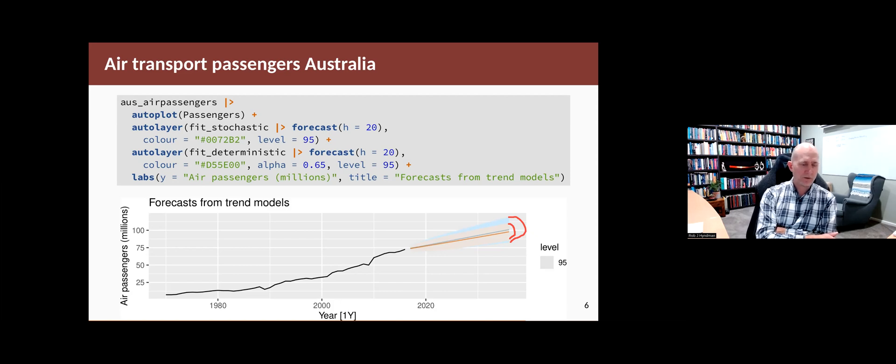So the deterministic trend is much narrower. And the reason is that we are making much stronger assumptions that what we see is going to continue into the future. Whereas with the stochastic trend, because of the differencing, it's allowing it to move around a lot more.